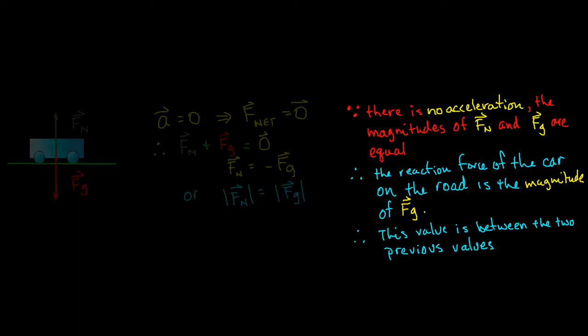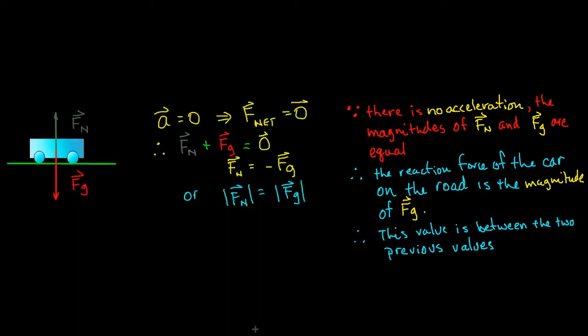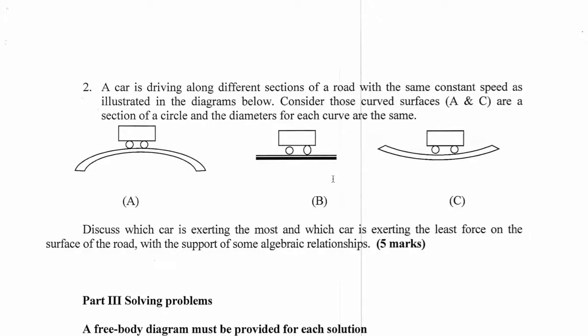And therefore the reaction force of the car on the road is the magnitude of vector Fg. And as a result if we were to rank these now, this value is somewhere between the two previous values. So if we go back to the original question when we look from left to right our situation, the greatest force will occur, the greatest force of the vehicle on the road will occur in situation C. The least will occur in situation A and the value in between will be situation B. I hope that makes that a little more clear for you.